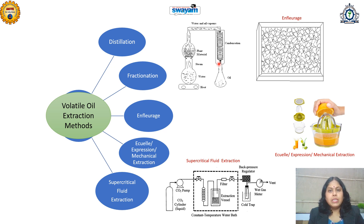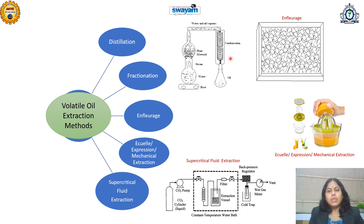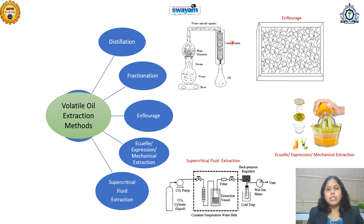Fractionation is the advanced type of distillation where condensation columns are modified to separate constituents of different boiling points, like eugenol, cinnamaldehyde, or menthol. Depending upon the boiling point, there are separate outlets for the separation of each constituent from the essential oil mixture.